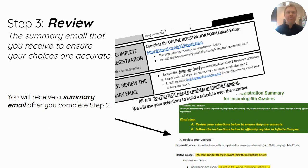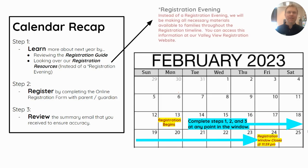Once you complete that form, you'll get a summary email that you can review to ensure that those classes are accurate. If they are, then you are good to go for registration and we will build a schedule out for you for next year.